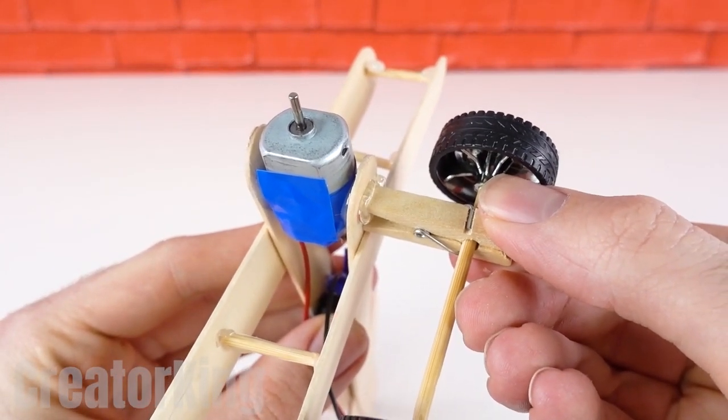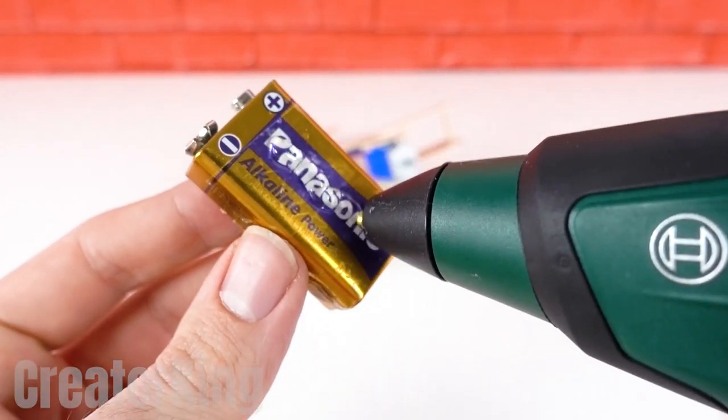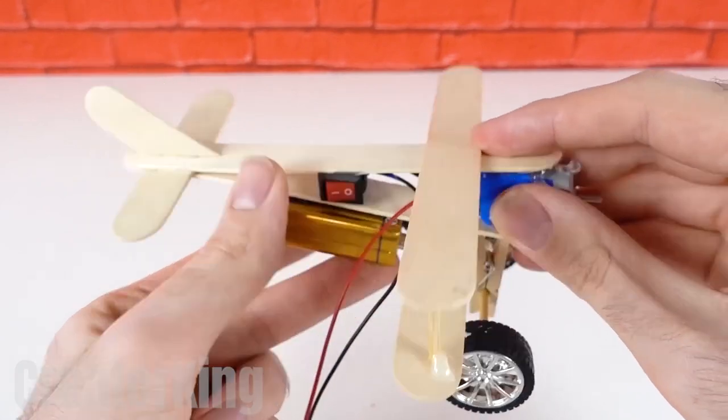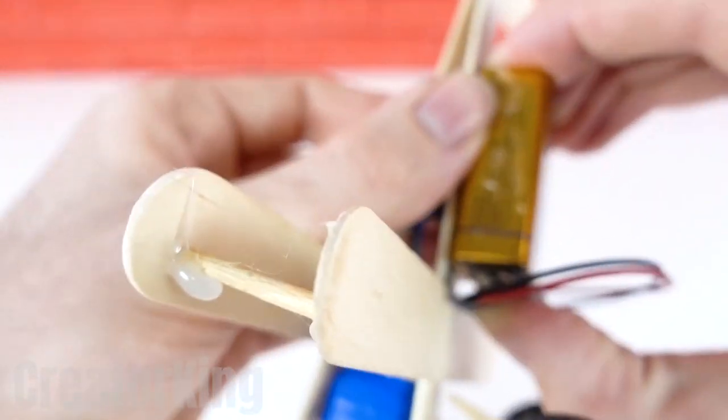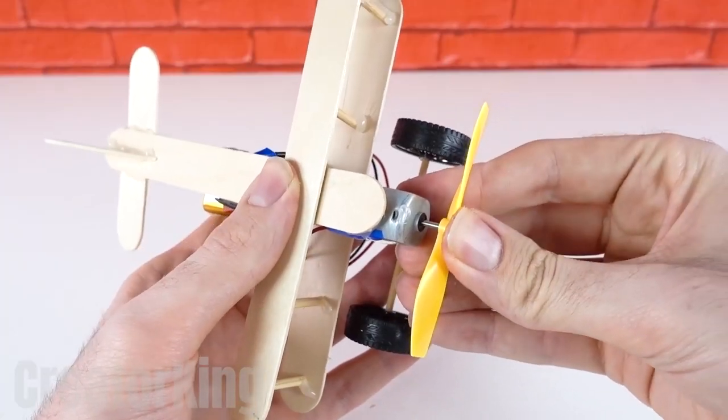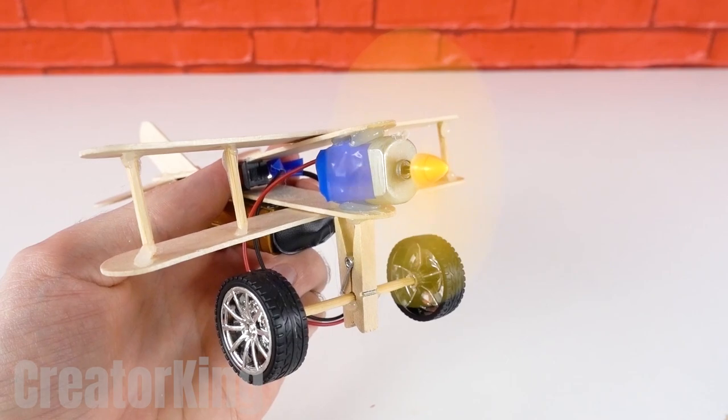If we want the future propeller to work, we'll need one of the 9-volt batteries that we love so much. Glue it to the bottom of the airplane and snap it onto the wire clasp. Take the first propeller you can find and attach it to the motor pivot. It's practically ready to take flight.